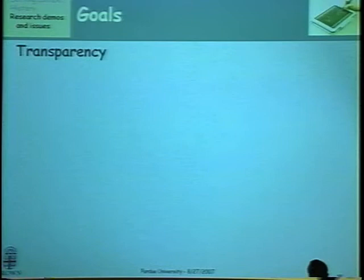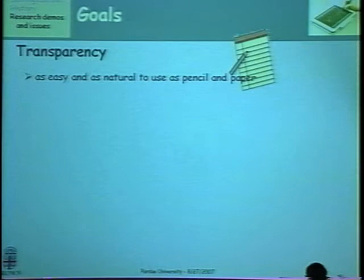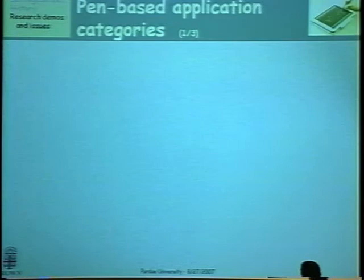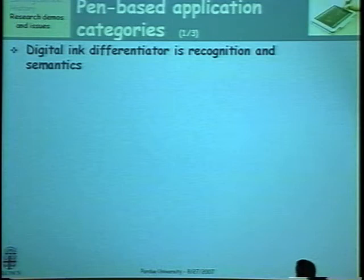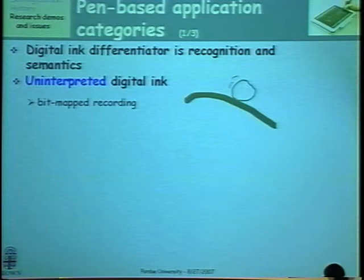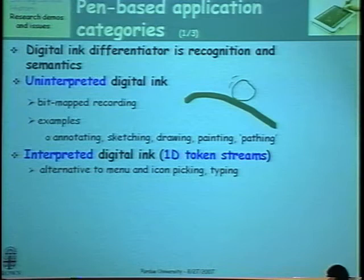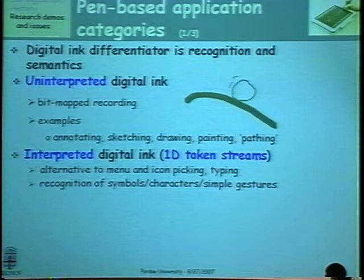Why do we want to do this? What are our goals? Transparency — minimizing the cognitive distance — is foremost in my mind. I want it to be as easy as pencil and paper, but with the power of the computer behind it. I want the best of both worlds. Sometimes I want it to run in batch, and sometimes I want immediate feedback as I'm gesturing and drawing. Build on what we already know so that we have to do less encoding of 2D information to 1D token streams for mathematics, chemistry, music, and diagrams. The differentiator for digital ink is the interpretation — the assigning of semantics. We need to recognize symbols, characters, and gestures.